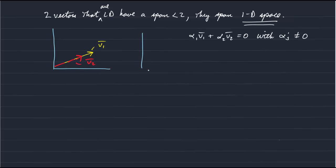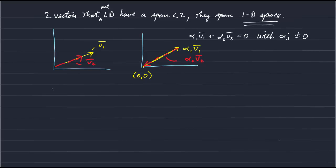You can imagine that if we have alpha 1 V1, and we stick the tail of alpha 2 at the head of alpha V1. So the red is alpha 2 V2. Then you can see that when we sum them, this gets us back to 0.